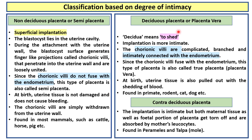Deciduous placenta, or placenta vera. Deciduo means to shed. In deciduous placenta, the implantation is more intimate compared to non-deciduous placenta. The chorionic villi are complicated, branched, and intimately connected with the endometrium. Since the chorionic villi fuse with the endometrium, this type of placenta is also called true placenta or placenta vera — vera means true.